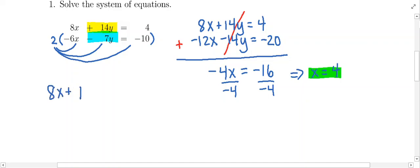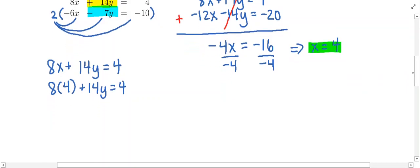So 8x plus 14y equals 4. I'm going to substitute 4 for x. So it's going to be 8 times 4 plus 14y equals 4. This is going to tell me 32 plus 14y equals 4. And I have an equation that just has a y. So it's going to be really easy to solve for y. Just isolate it.